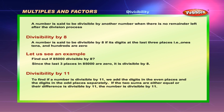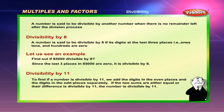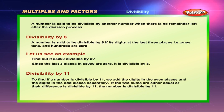Divisibility: a number is said to be divisible by another number when there is no remainder left after the division. Divisibility by 8: a number is divisible by 8 if its digits at the last three places — ones, tens, and hundreds — are all zero. For example, since the last three places in 85,000 are zero, it is divisible by 8.